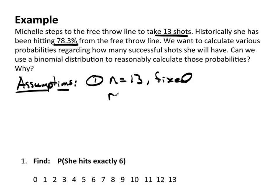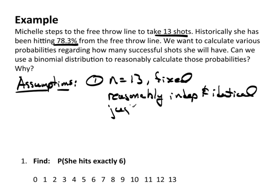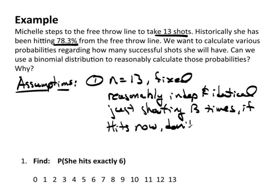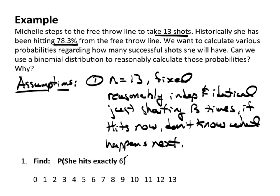They're independent because she's just shooting 13 times — if she hits now, we don't know what will happen next. This addresses the idea of independence and the identical nature of each trial, which satisfies the first assumption.